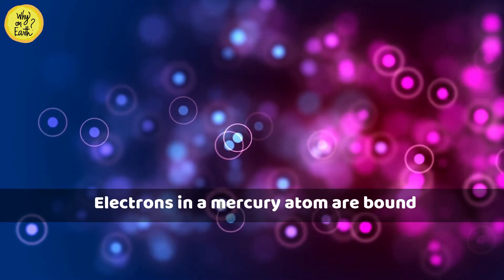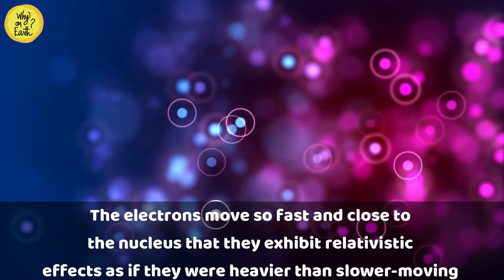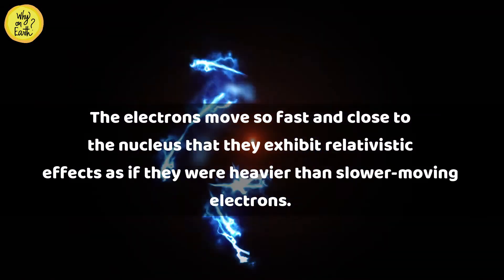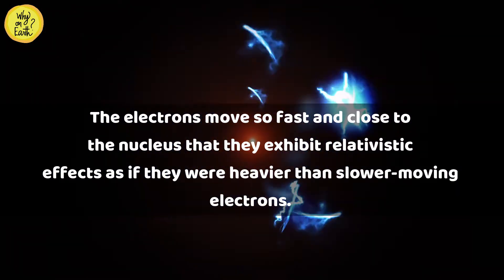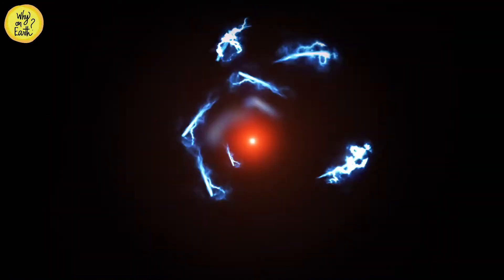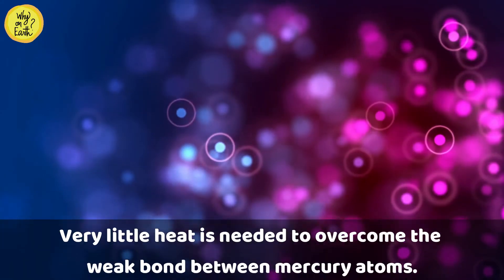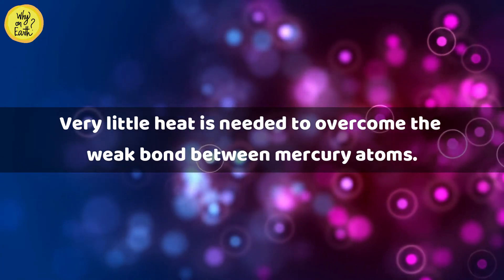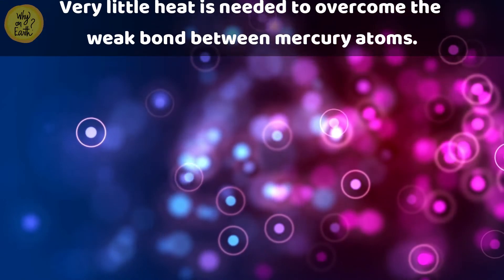In fact, the electrons move so fast and close to the nucleus that they exhibit relativistic effects, as if they were heavier than slower moving electrons. Very little heat is needed to overcome the weak bond between mercury atoms. Due to the behavior of the valence electrons, mercury has a low melting point.